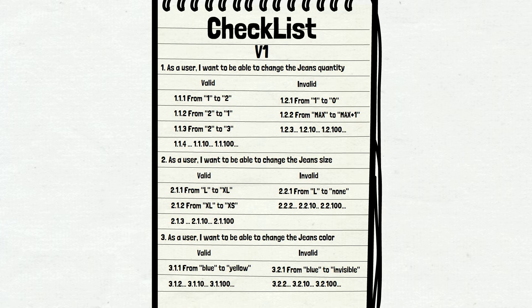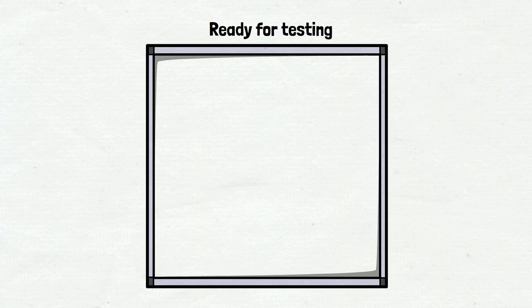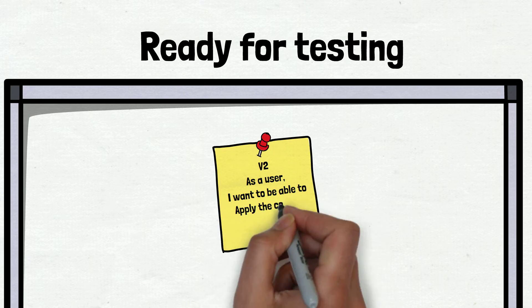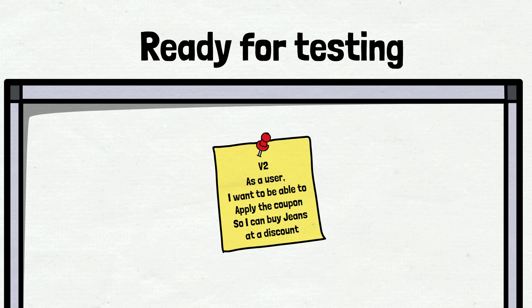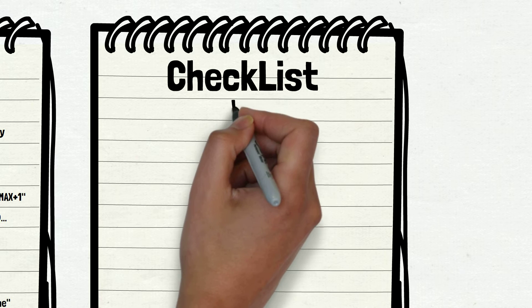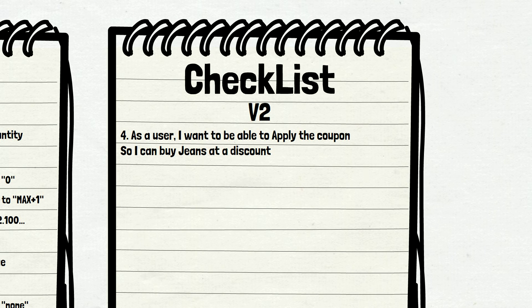Currently developers are working on the second version of the page. Finally, one of the developers moved the ticket. The user story sounds like this: as a user, I want to be able to apply a coupon so I can buy jeans at a discount. This is the first story as part of version 2 of the website, and we create a separate checklist for this version. We already tested three stories in the first version, so this one is the fourth story in total.